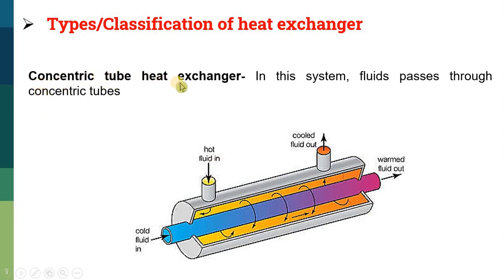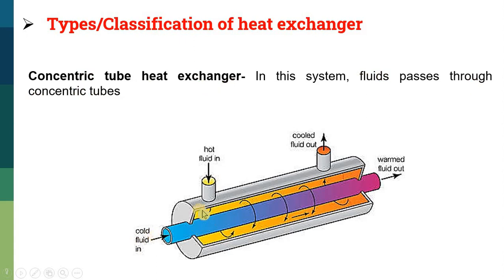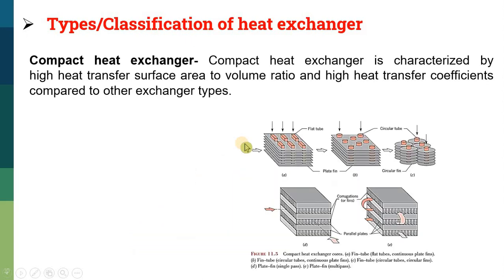Next is known as a concentric tube heat exchanger. Concentric tubes are tubes having the same center or axis. In this system, fluid passes through concentric tubes. There are two tubes: one of smaller diameter through which the cold fluid passes, and another of larger diameter through which the hot fluid passes.